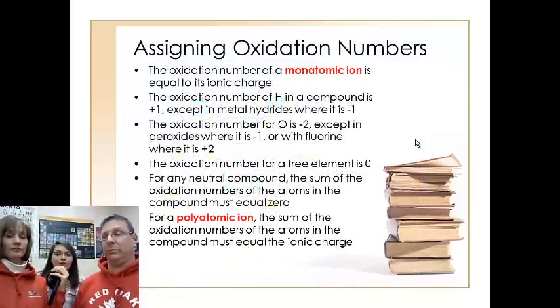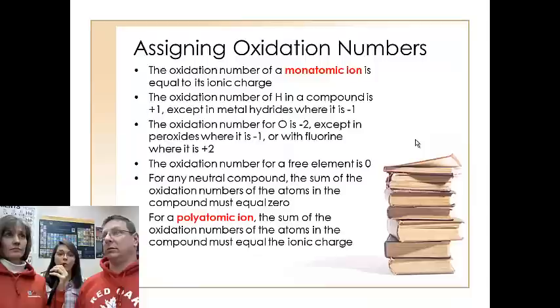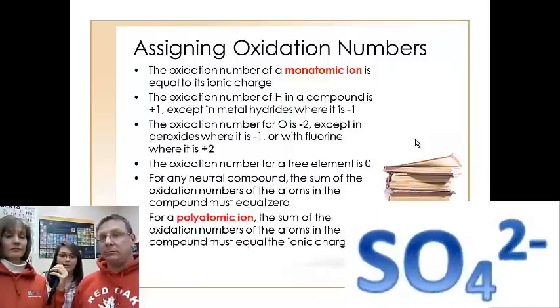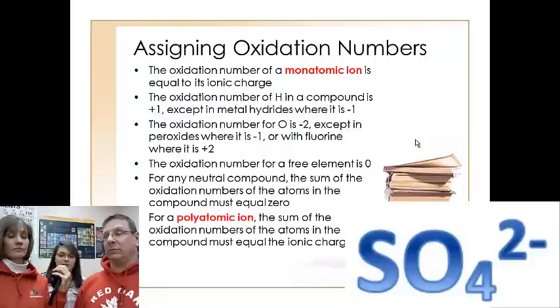All right, our sixth and final rule to follow when we're assigning oxidation numbers has to deal with those polyatomic ions. So those ions that contain obviously more than one atom. For example, sulfate, SO4 minus two. When you have that, the sum of your oxidation numbers has to equal the charge or the ionic charge of that polyatomic ion. So unlike the neutral compound where it's summed up to zero, in a polyatomic ion, for example, sulfate, SO4 minus two, the sum of your oxidation numbers has to equal that negative two charge.